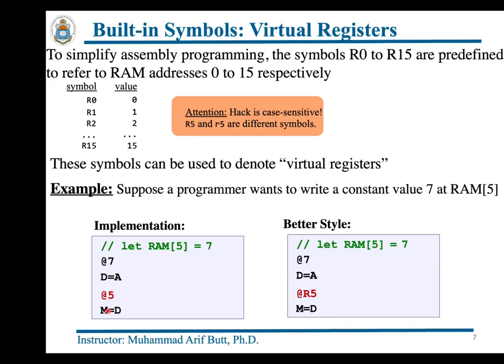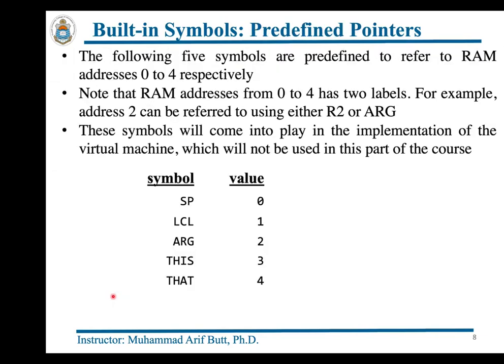A better style uses virtual registers: the instruction '@5' is replaced by '@R5'. The assembler automatically replaces the R5 symbol with the value 5. This adds complexity to the assembler but makes the code more readable and understandable.